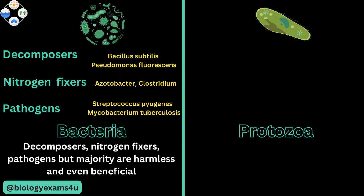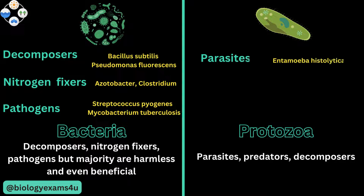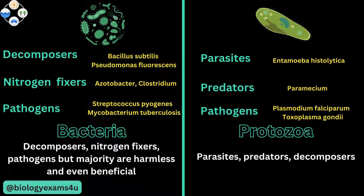Whereas protozoans: some are parasites like Entamoeba histolytica, which lives in the intestine causing intestinal illness. Some are predators like Paramecium, which feeds on bacteria, fungi, and small zooplanktons. And some are pathogens like Plasmodium falciparum, which causes malaria, and Toxoplasma gondii, which causes toxoplasmosis — so some are disease-causing pathogens as well.